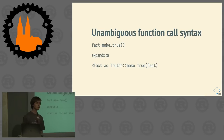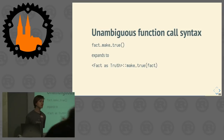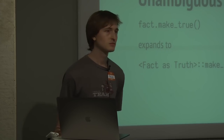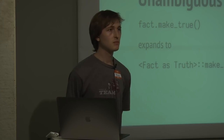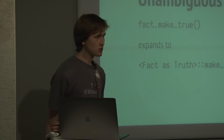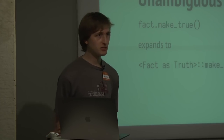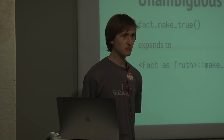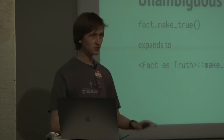Question from the audience: if multiple traits with the same method are implemented on one data type, would there be a default, or a compile-time error with the regular syntax? Answer: I actually don't know the precise answer. I think you get a compiler error if it's ambiguous. But if you use glob imports, there may be some other rules. We can try it later — this is a very interesting question.